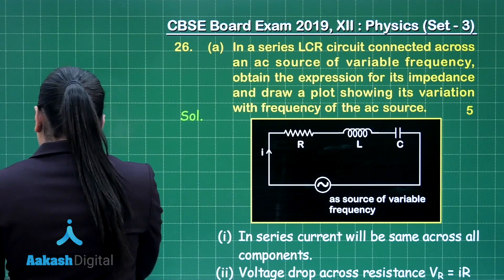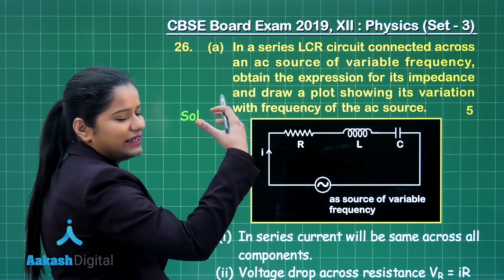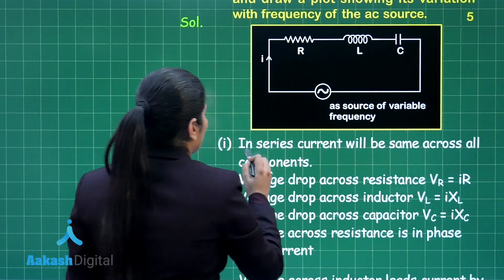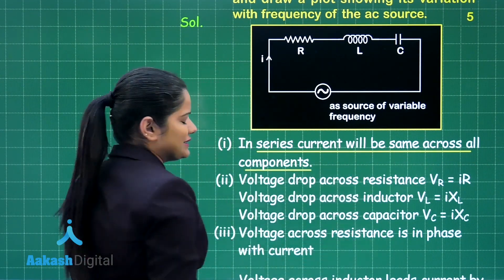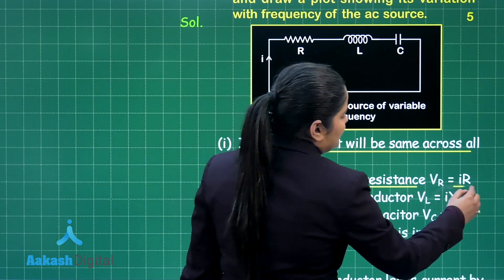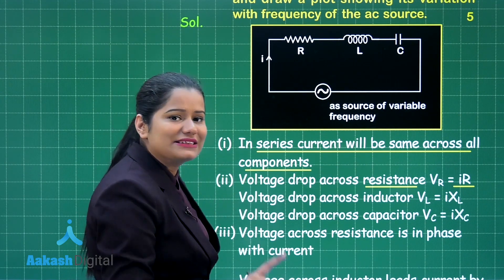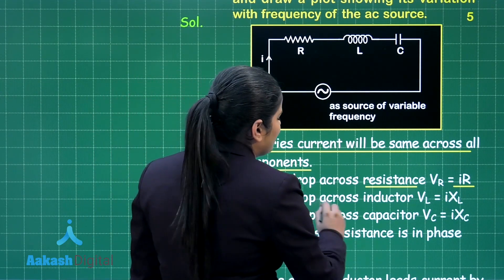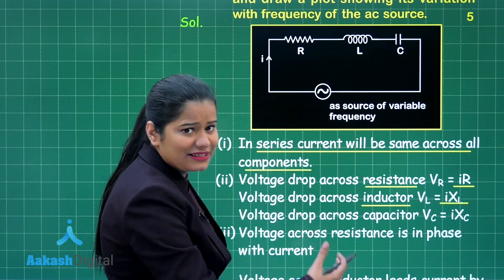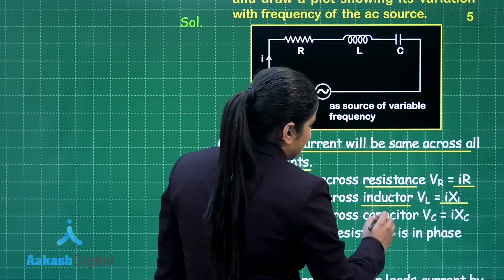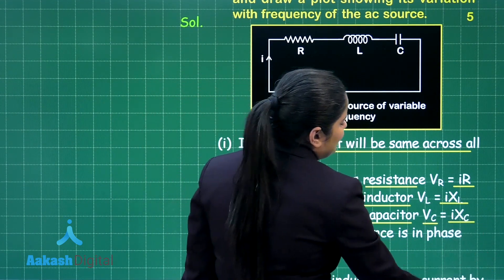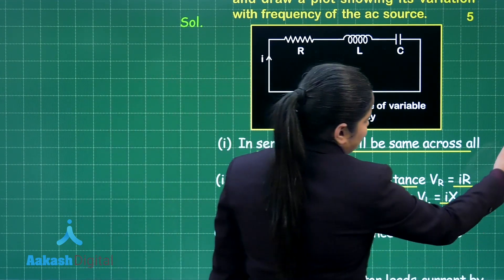In the case of a series combination of resistance, inductor, and capacitance, the same current flows through all the components. The voltage drop across the resistance is the product of the current and its resistance. The voltage drop across the inductor is the product of the current and the reactance of the inductor. Similarly, across the capacitor, you calculate the voltage by multiplying the current and the reactance of the capacitor.